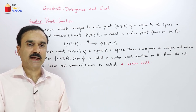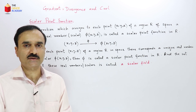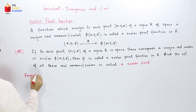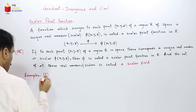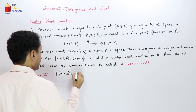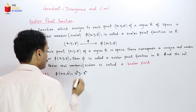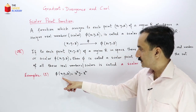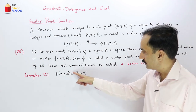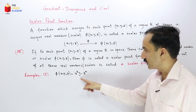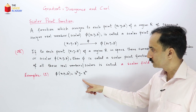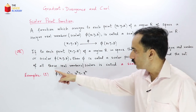Now let us consider some examples of scalar point functions and scalar fields. If we consider a function phi of x, y, z equal to x cubed y minus z squared, this expression is a function. It takes any point x, y, z of 3-dimensional space and assigns this real number to it. So this function is, according to the definition, a scalar point function, and it also defines a scalar field.